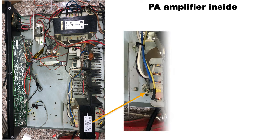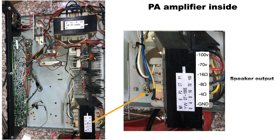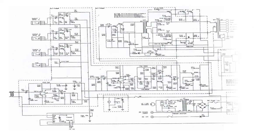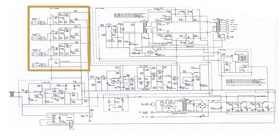Inside this amplifier you can see two transformers. This is the output stage transformer. As you can see, it has ground, 4 ohms, 8 ohms, and 60 volt taps for low-impedance speaker outputs, and then 70 volts and 100 volts for transmitting the speaker sound over long distances.